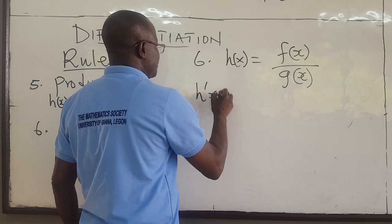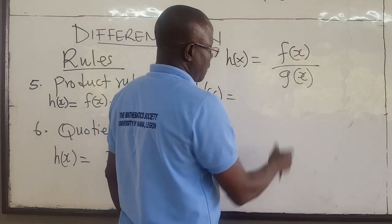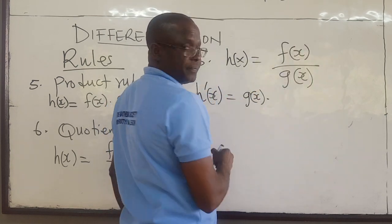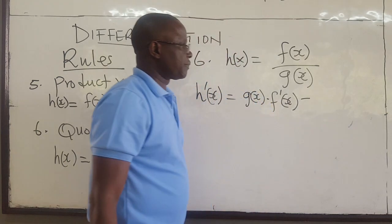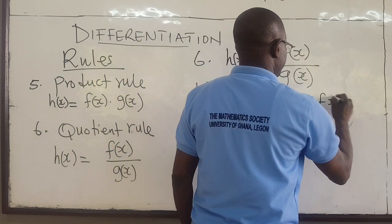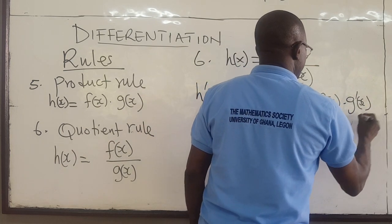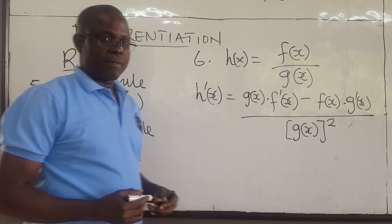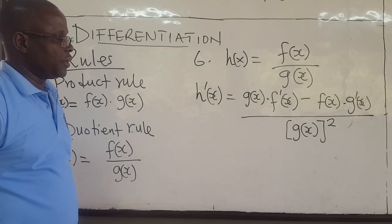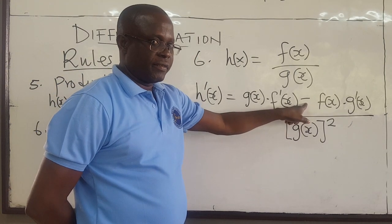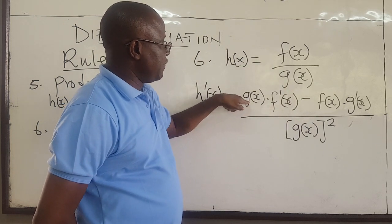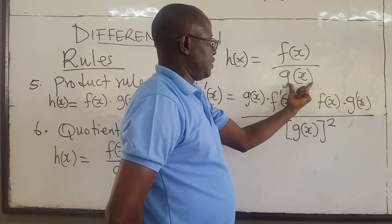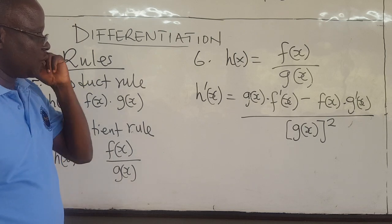The derivative h'(x), by the quotient rule, is equal to: leave g(x) and find the derivative of f — that's f'(x) — minus leave f(x) and multiply by the derivative of g — g'(x) — all over g(x) squared. The order is important because you have a minus sign. You leave the denominator, find the derivative of the numerator, minus leave the numerator times the derivative of the denominator, divided by the denominator squared.